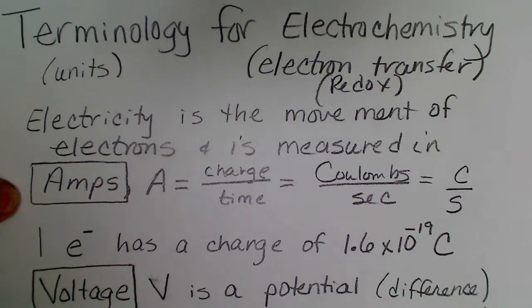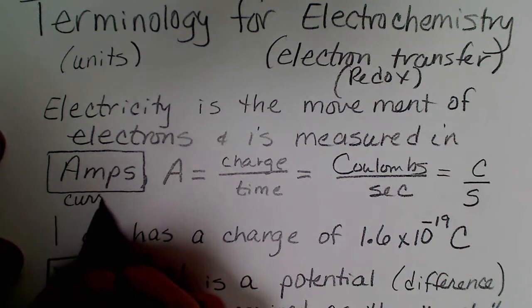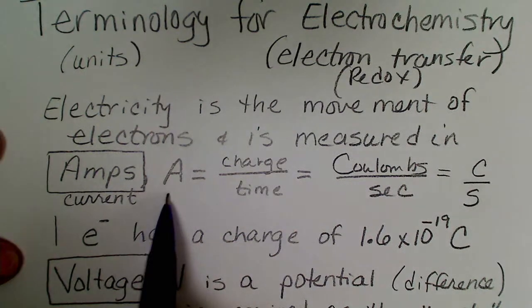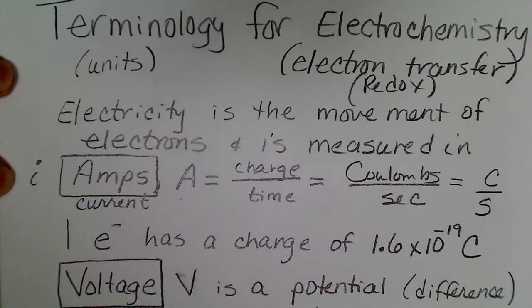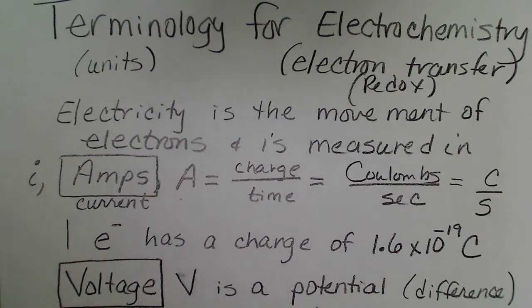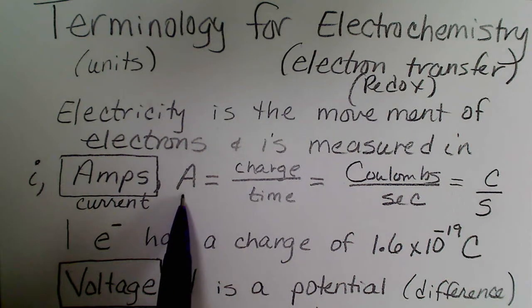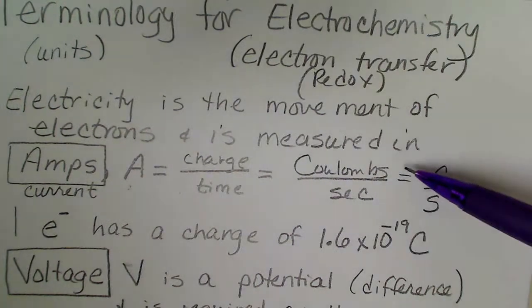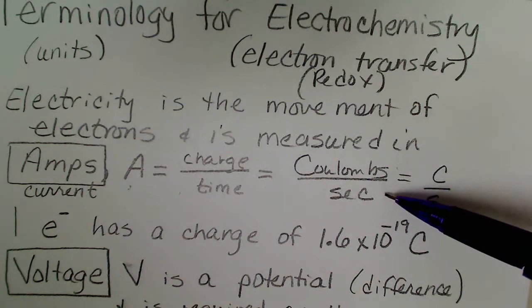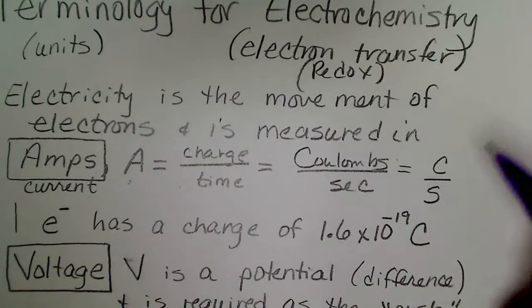Electricity is measured, or current is measured, in amps. An amp is actually an SI unit. Sometimes a physics book will use the lowercase i for amp, so it just depends on what discipline or textbook we're using. But in the chemistry book, capital A will be the unit used for current, and that's defined as charge per time.